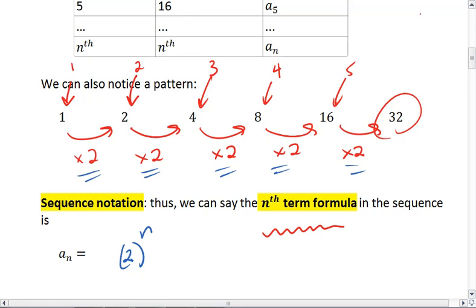And for this one, we don't want to raise it to the n, because then that would give me 2. We're going to raise it to the n minus 1. So if I check this out, I realize a sub 1 is going to be 2 to the 1 minus 1, which is 2 to the 0, which is 1. That checks out.